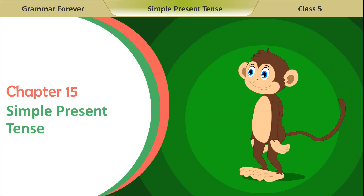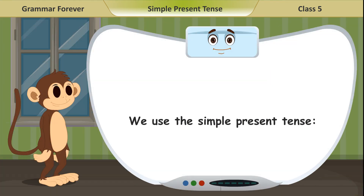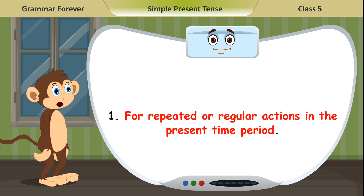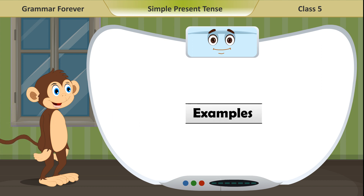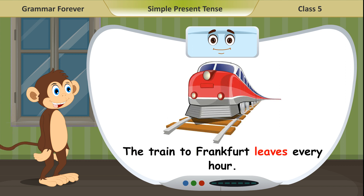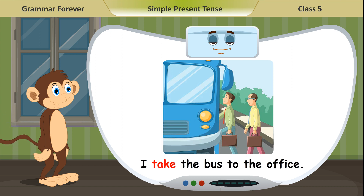Chapter 15: Simple Present Tense. We use the Simple Present Tense for repeated or regular actions in the present time period. Examples: Sakshi sleeps for 8 hours every day. The train to Frankfurt leaves every hour. I take the bus to the office.